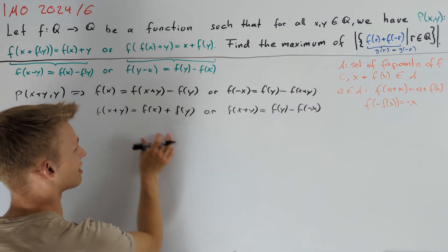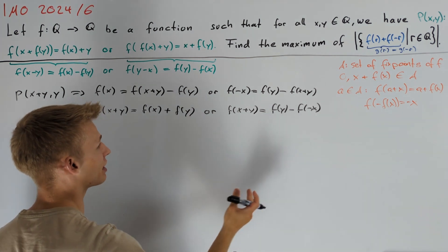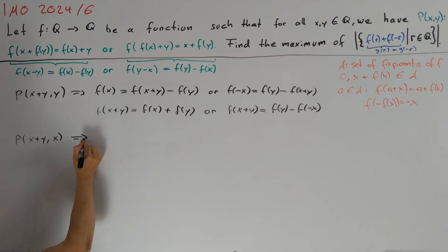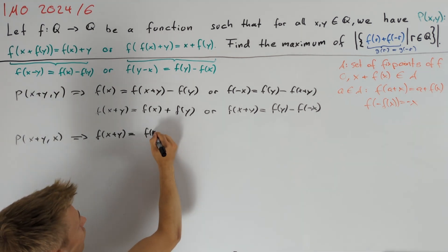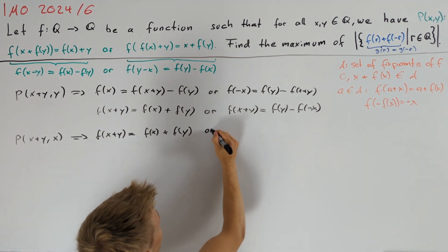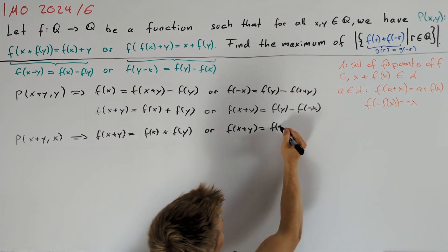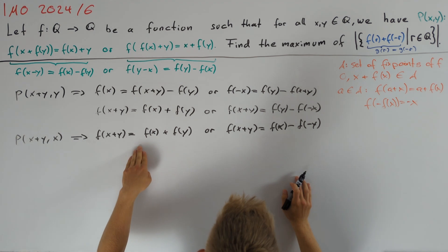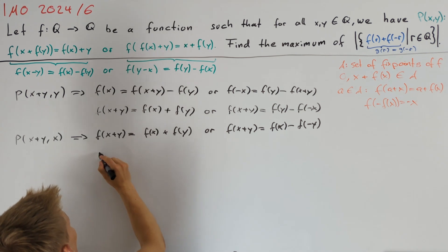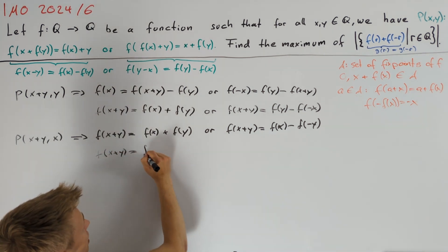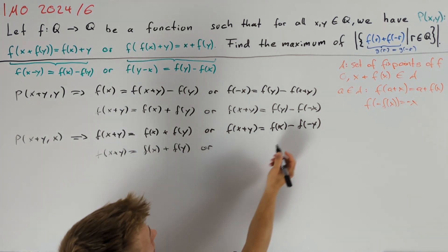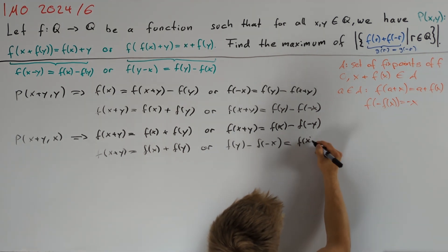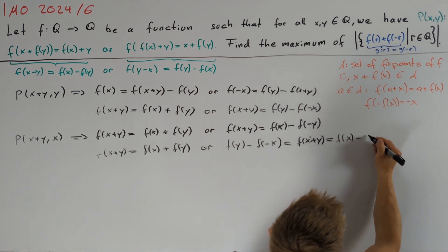The left-hand side is symmetric in x and y while the right-hand side is not, so we can swap x and y to get more information. Considering P(x+y, x) gives us either f(x+y) = f(x) + f(y) or f(x+y) = f(x) - f(-y). Together, these two statements imply that either the Cauchy equation holds, or both right-hand side equations are true: f(y) - f(-x) = f(x+y) = f(x) - f(-y).